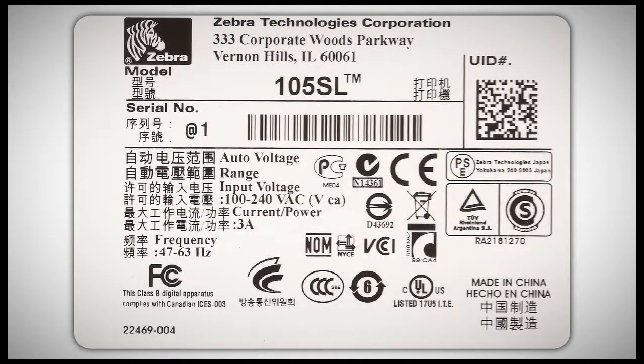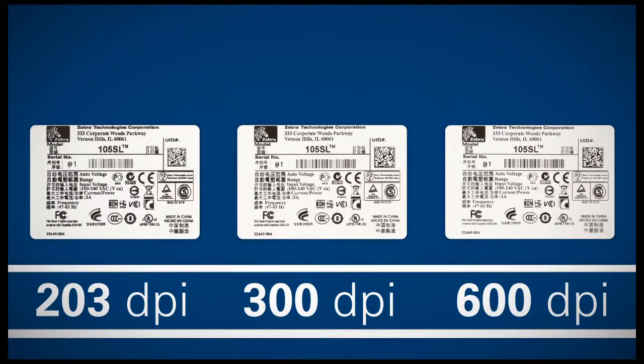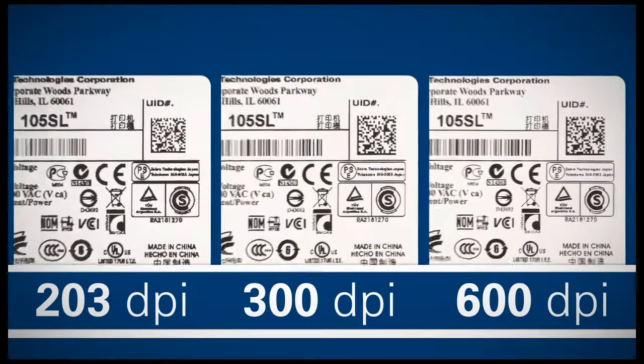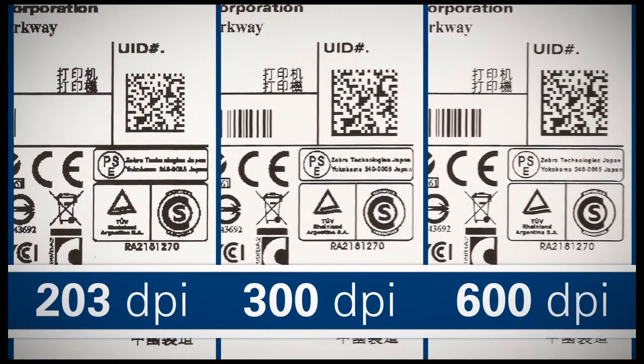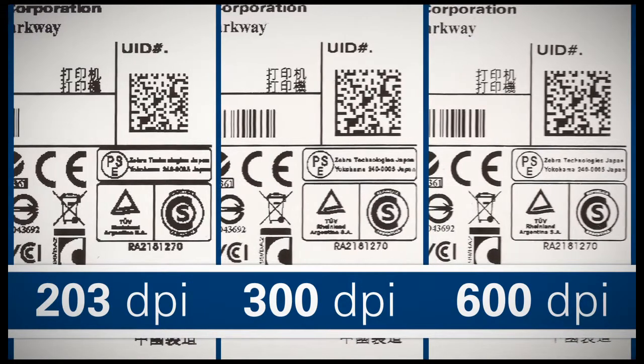Also, text, barcodes, graphics, and photos are very important to consider. Printing text and regulatory symbols with a font size 6 and under requires a 600 DPI printer so that the text is readable and the regulatory symbols are identifiable.